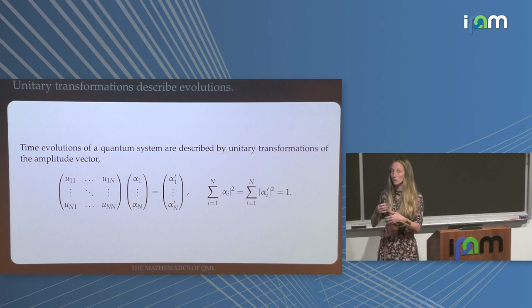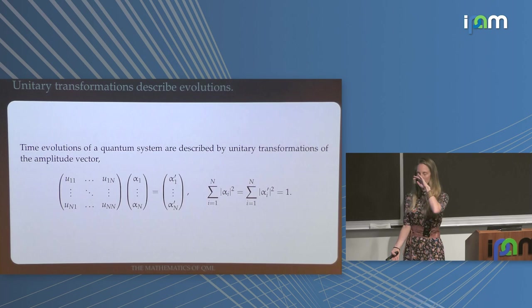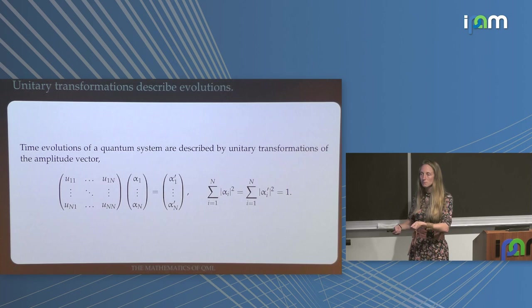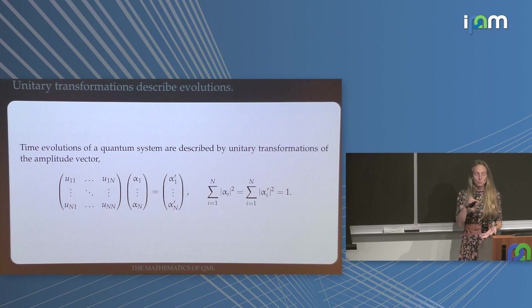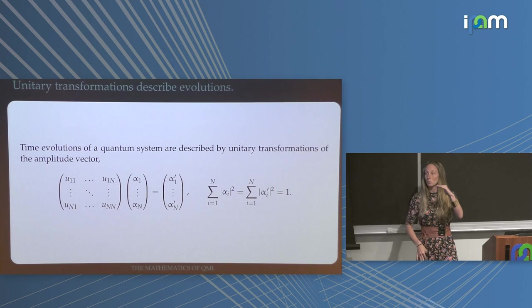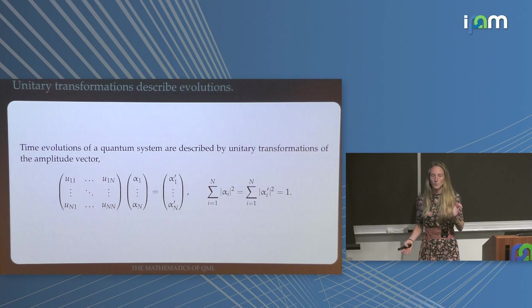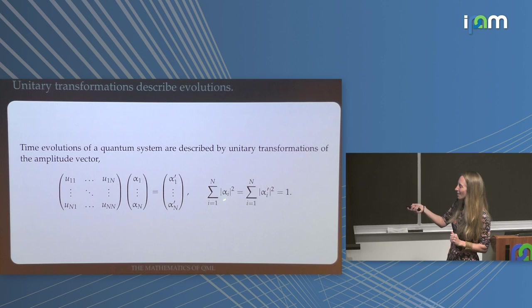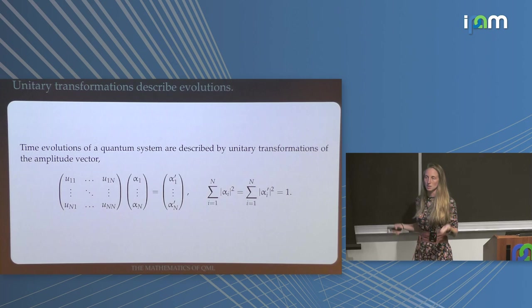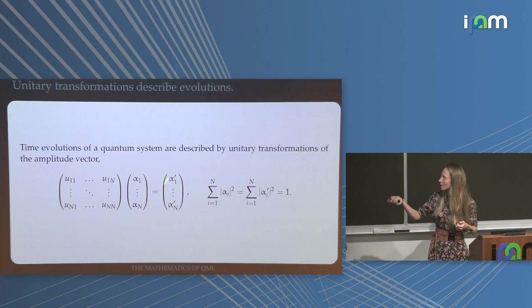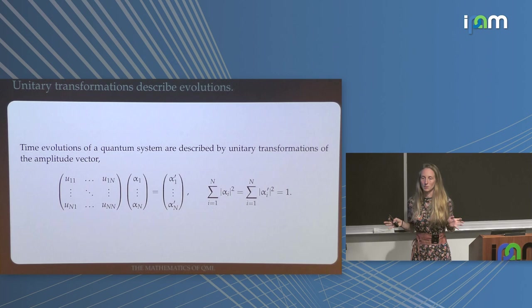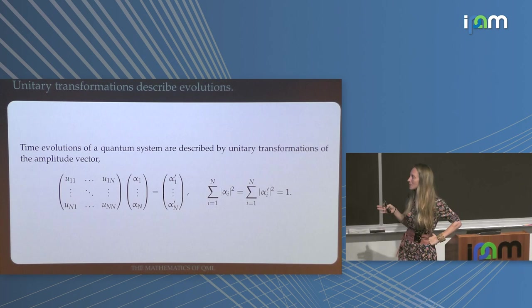We're also interested in evolutions. If a system is described by a probability distribution and you do something to it, the system afterwards is described by a different probability distribution. In classical probability, the transformation has to preserve that the probabilities add up to one — it would be a stochastic matrix. In quantum theory, the probabilities are something like the square of complex values, so the transformations are described by unitary matrices. This is just by virtue of the fact that the sum of the absolute squares must add up to one, otherwise the coefficients can't be probabilities. So unitary transformation is literally just to preserve probabilities in this formalism.